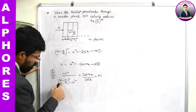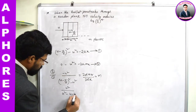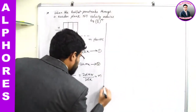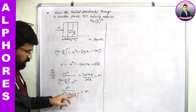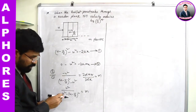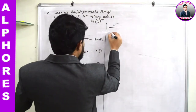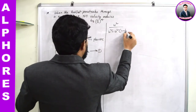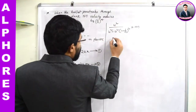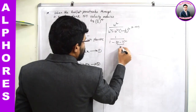So: u² / [u² - (u - u/n)²] = m. Taking u common from the bracket inside: u² / [u² - u²(1 - 1/n)²] = m. Both u² terms cancel, giving: 1 / [1 - (1 - 1/n)²] = m. Taking LCM: n² / [n² - (n-1)²] = m.